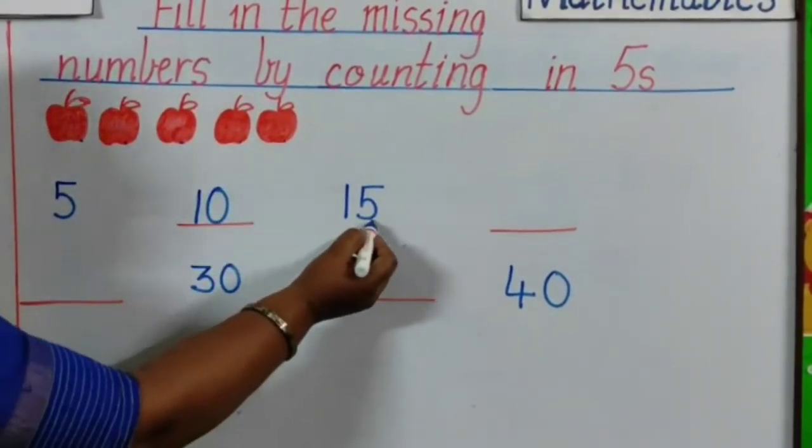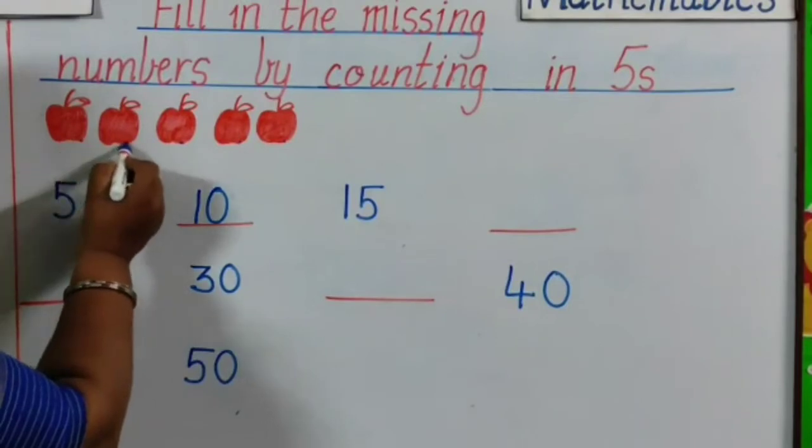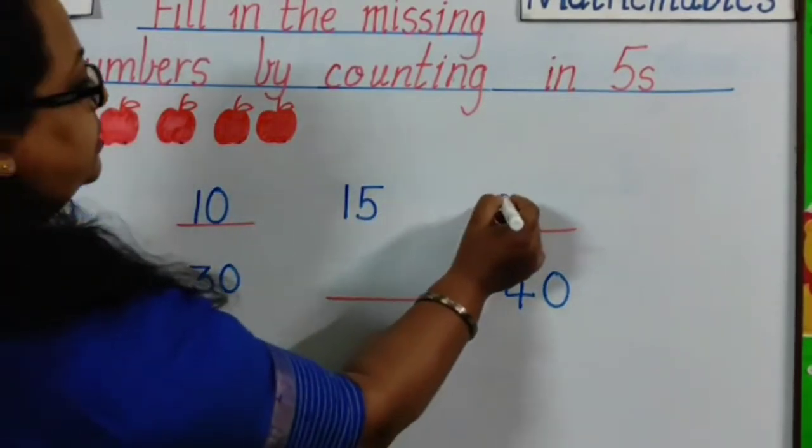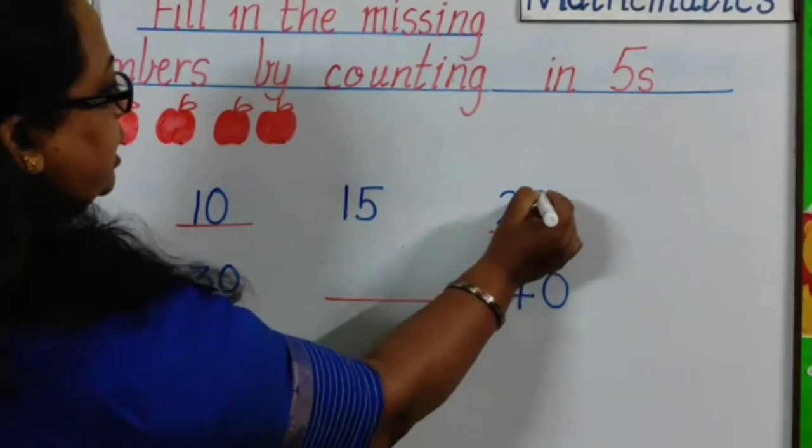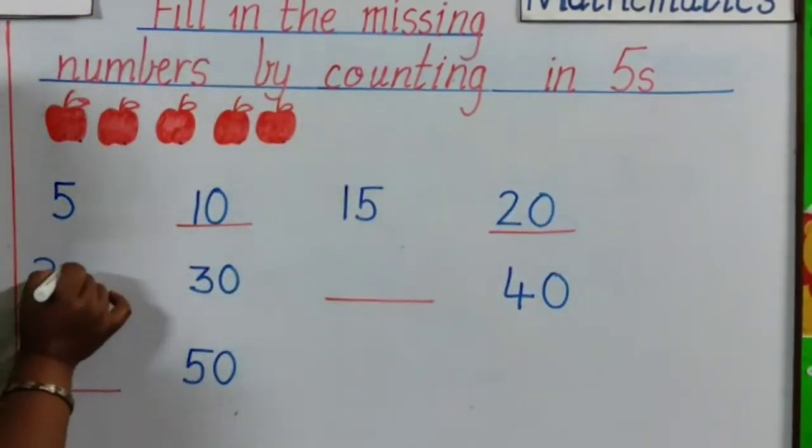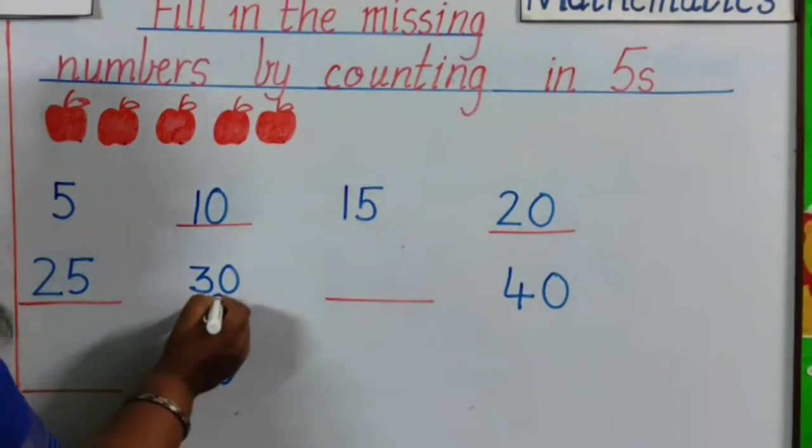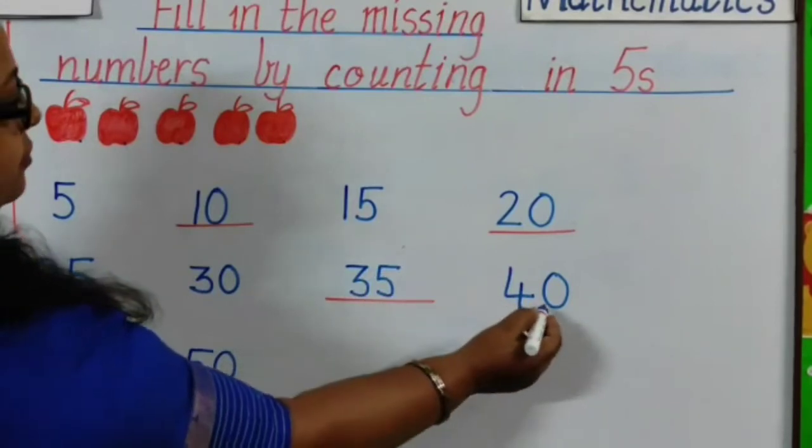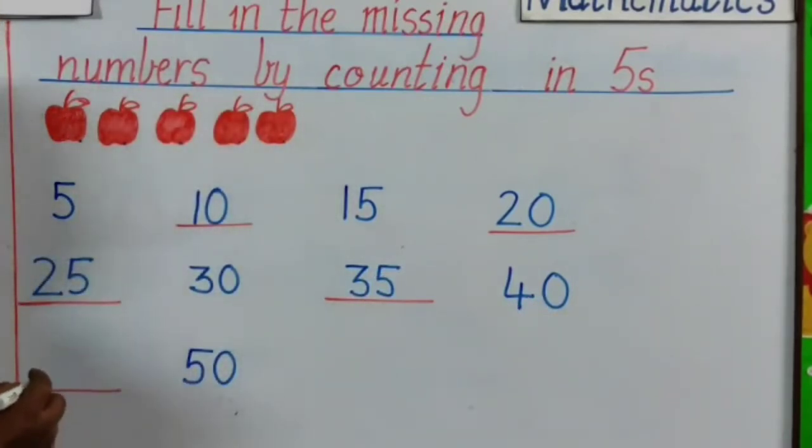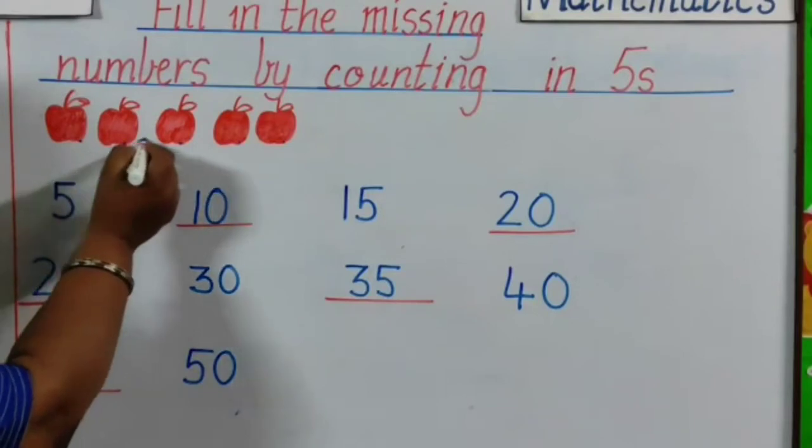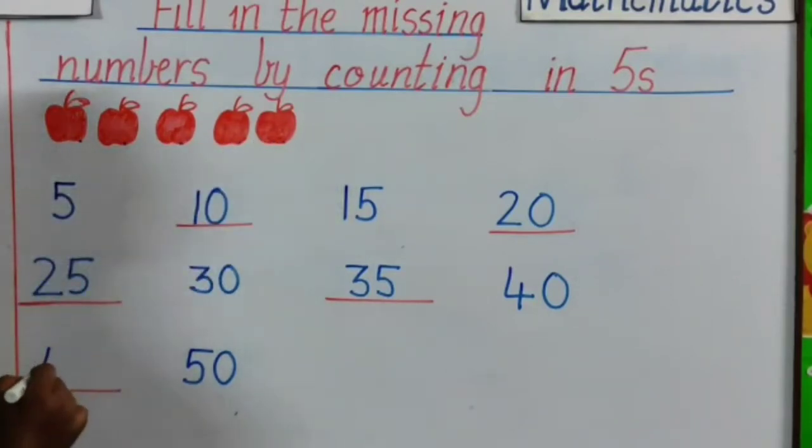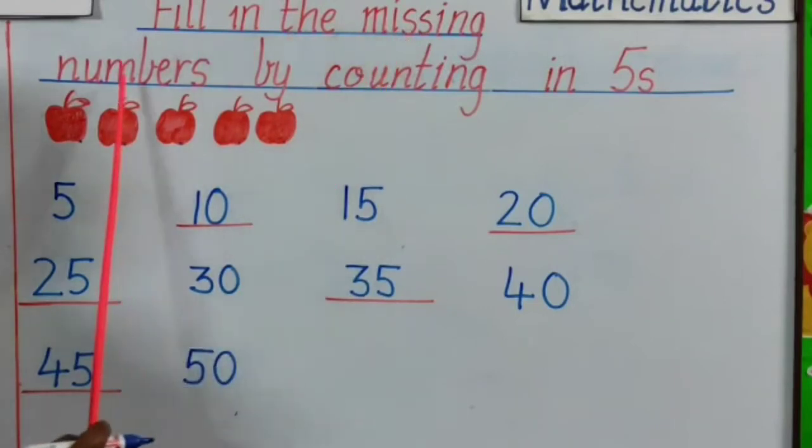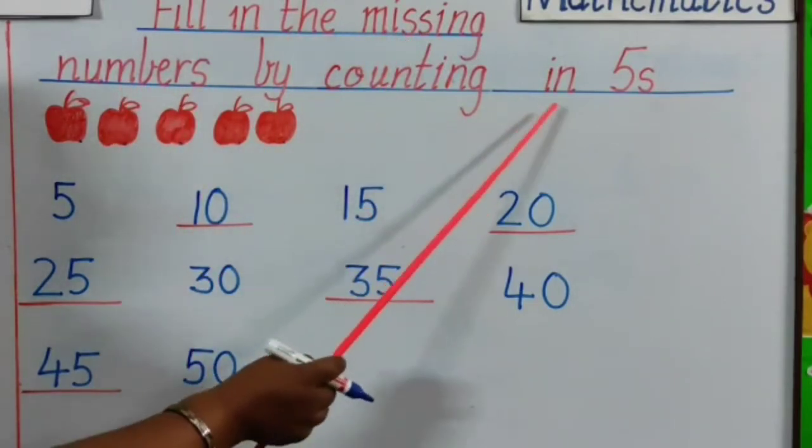After 10, 15. After 15, 16, 17, 18, 19, 20. Answer is 20. After 20, 25. Yes. After 25, 30. After 30, 35. 35, 40. After 40, 41, 42, 43, 44, 45. And 50. So, we have done. Fill in the missing numbers by counting in fives.